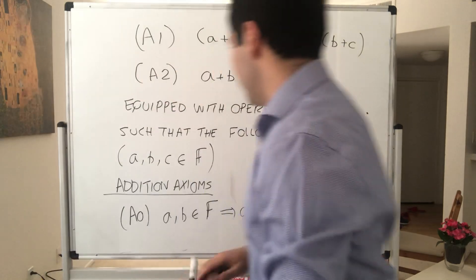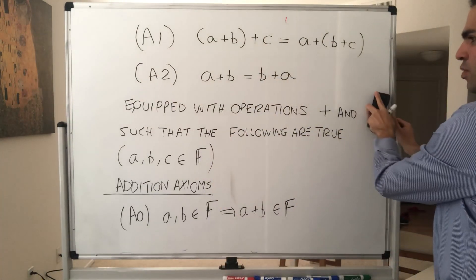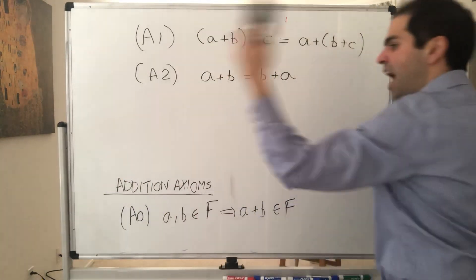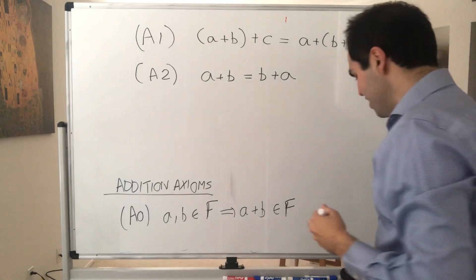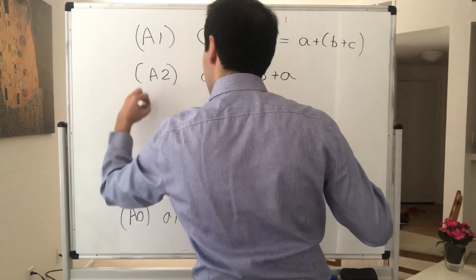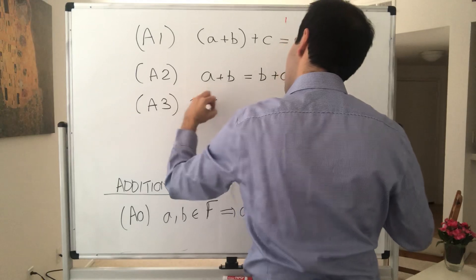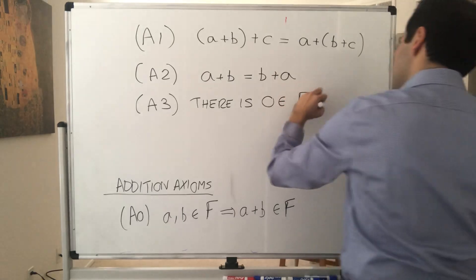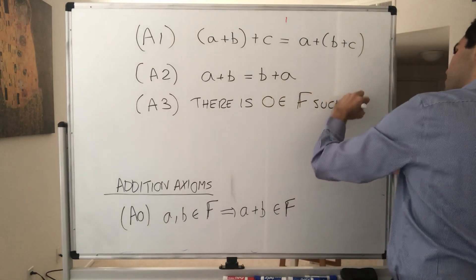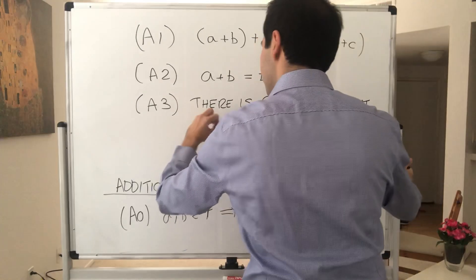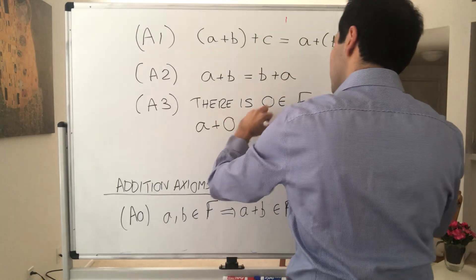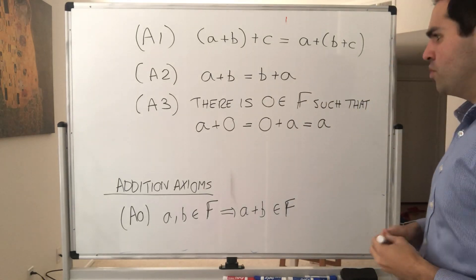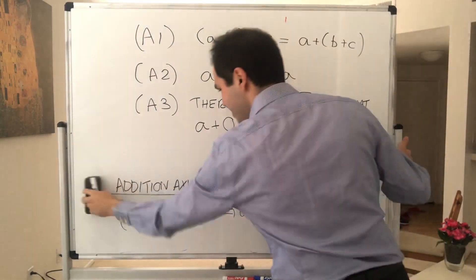And then there's a zero element. So what's the zero? What does the zero element do? All it does is, if you add it to anything, you get the same thing. So there is some element zero in F such that a plus zero equals zero plus a equals a. So it doesn't do anything, but it's so very important, interestingly.